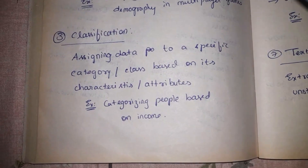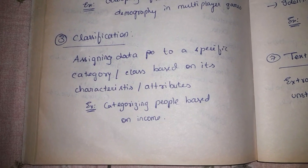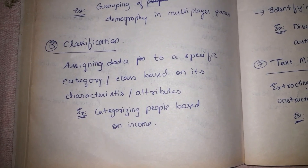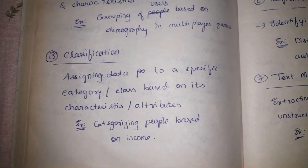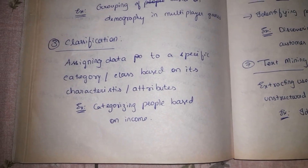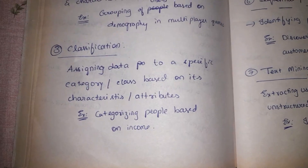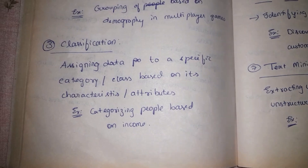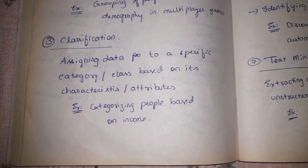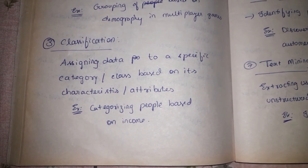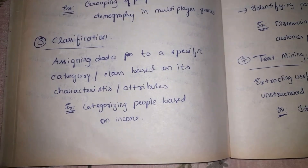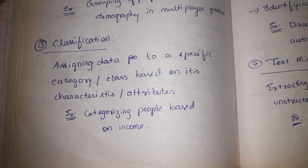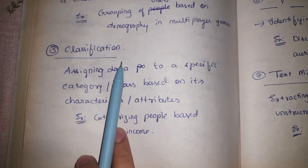The third functionality is classification. Classification simply means dividing data into specific categories. For example, we can categorize people based on their income: those with a net worth of more than one million are classified as high income, and those below that threshold are classified as low income.